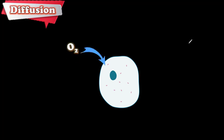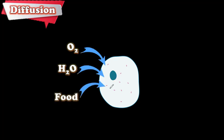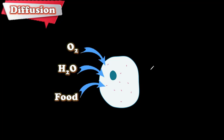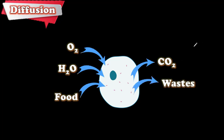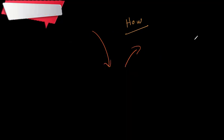We studied before respiration and excretion. We already know that some substances need to get inside of the cell and some substances want to get out of the cell. Substances like oxygen, water, and food get inside the cell where respiration takes place. Some substances we want to get rid of, like carbon dioxide and nitrogen waste. So how do these substances get in and out of the cell?